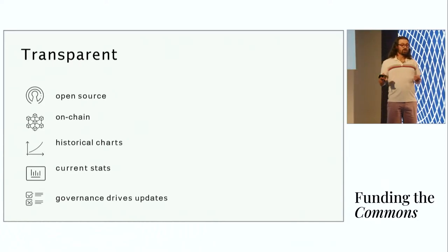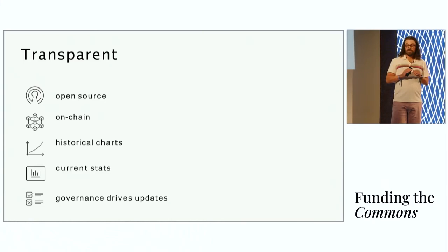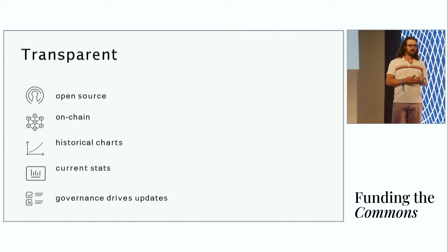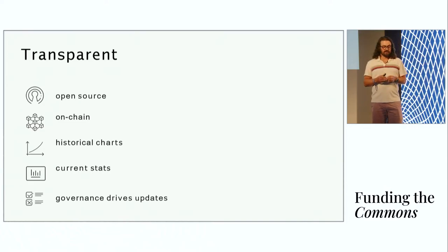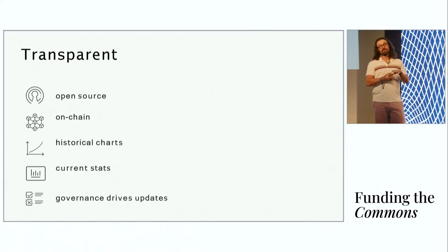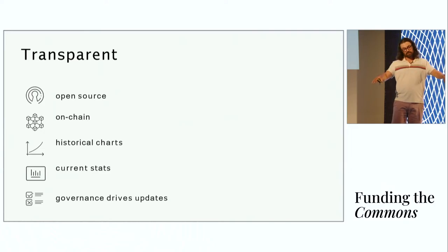One of our stated goals for this fluid quadratic funding mechanism is that we want to do it transparently, transparently in the ways that we've come to expect from Web3 products. We're building in the open. We're recording transactions on chain. We will be implementing the graph through GraphQL to query the data from the blockchain to provide historical charts and current stats, things like the flow rate from the community fund to the fluid QF mechanism, the flow rates to each grant over time. The artisan DAO will also drive updates to the various formulas and options in the mechanism through governance.